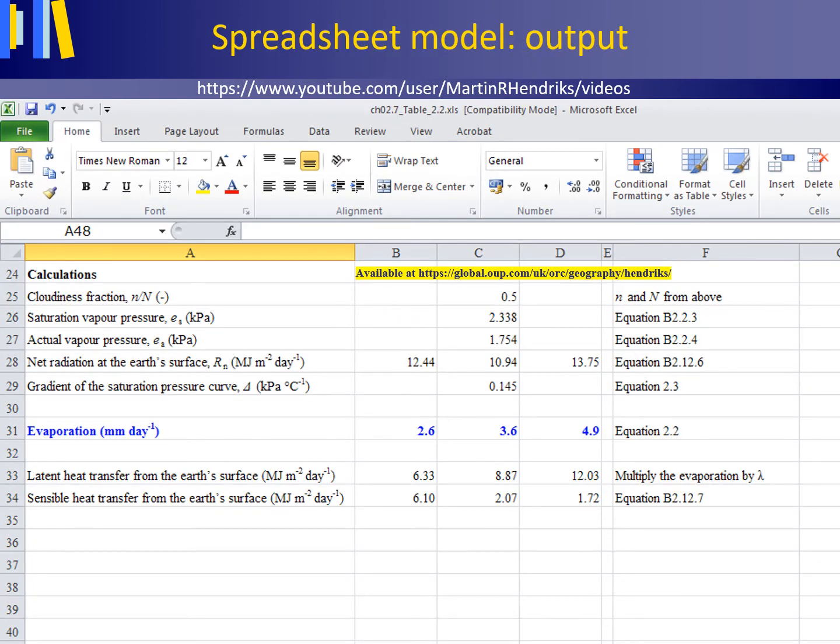This shows the spreadsheet lower down. Here we have the output on evaporation in mm per day for forest, grassland, and open water.